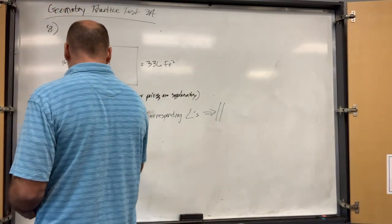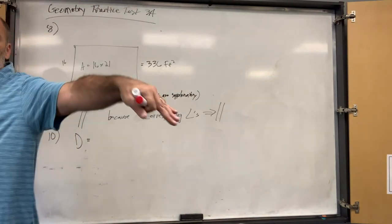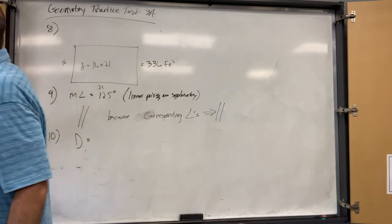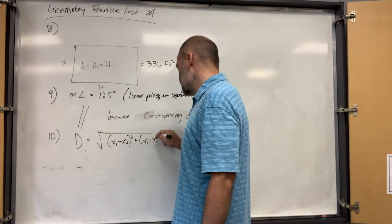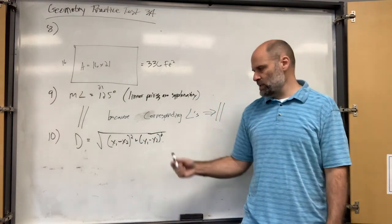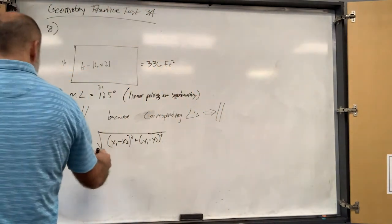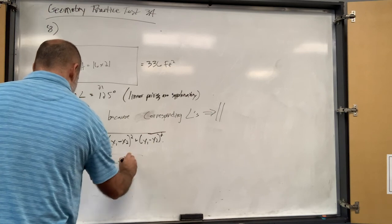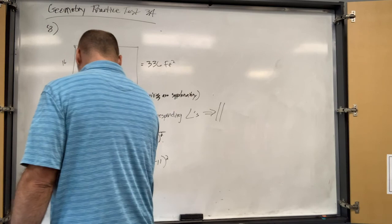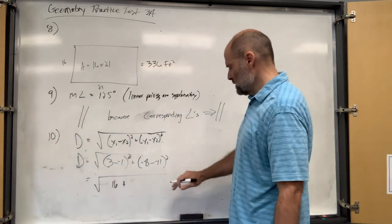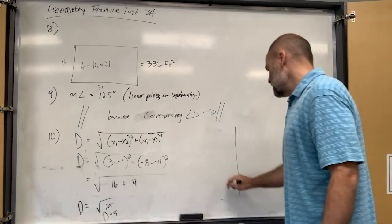Number ten: calculate the distance. You can use the distance formula or graph it and use the Pythagorean theorem. The distance formula is the square root of (x1 minus x2) squared plus (y1 minus y2) squared — which is basically the Pythagorean theorem. Plug in: 3 minus negative 1 squared plus negative 8 minus negative 11 squared.